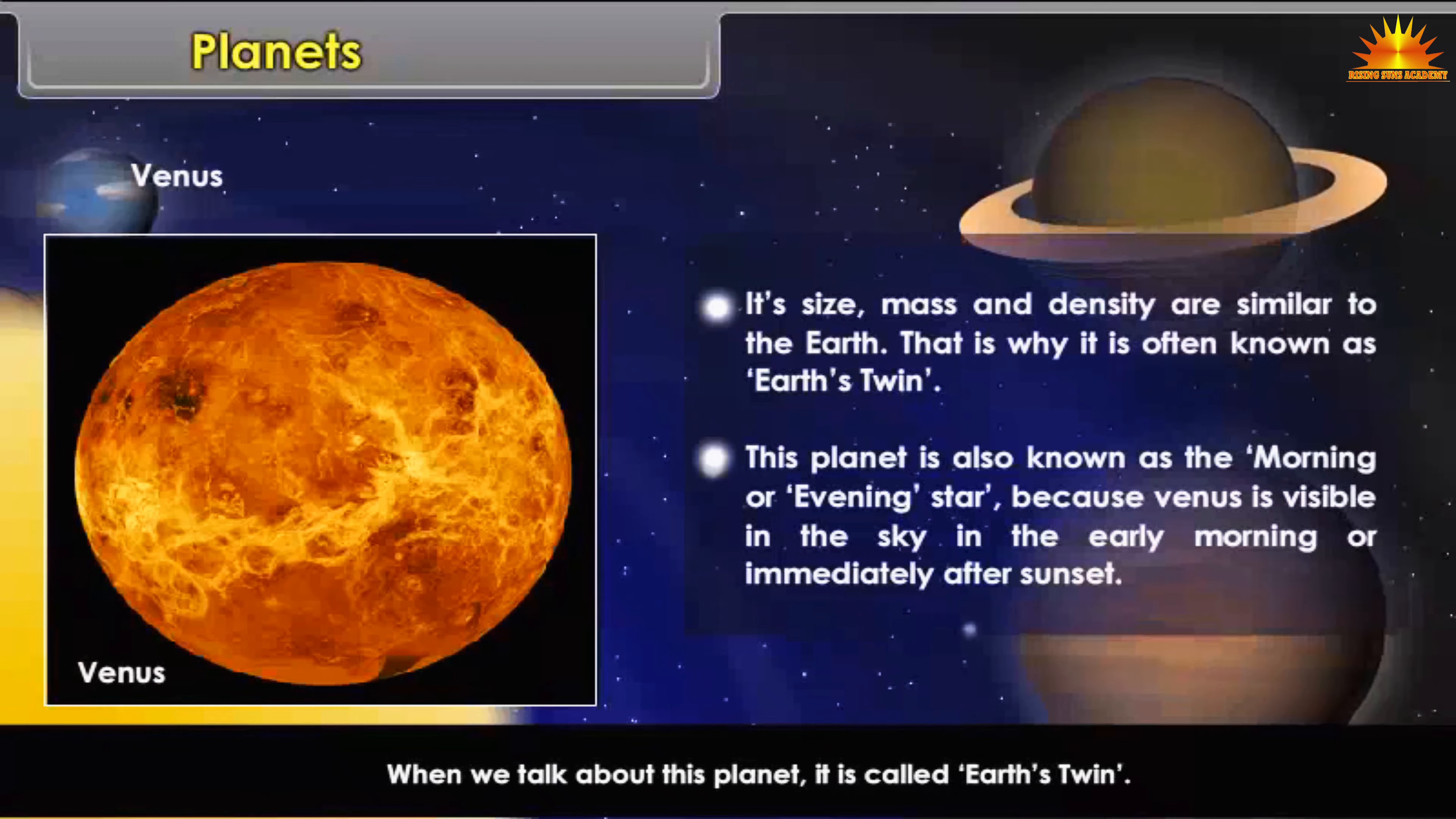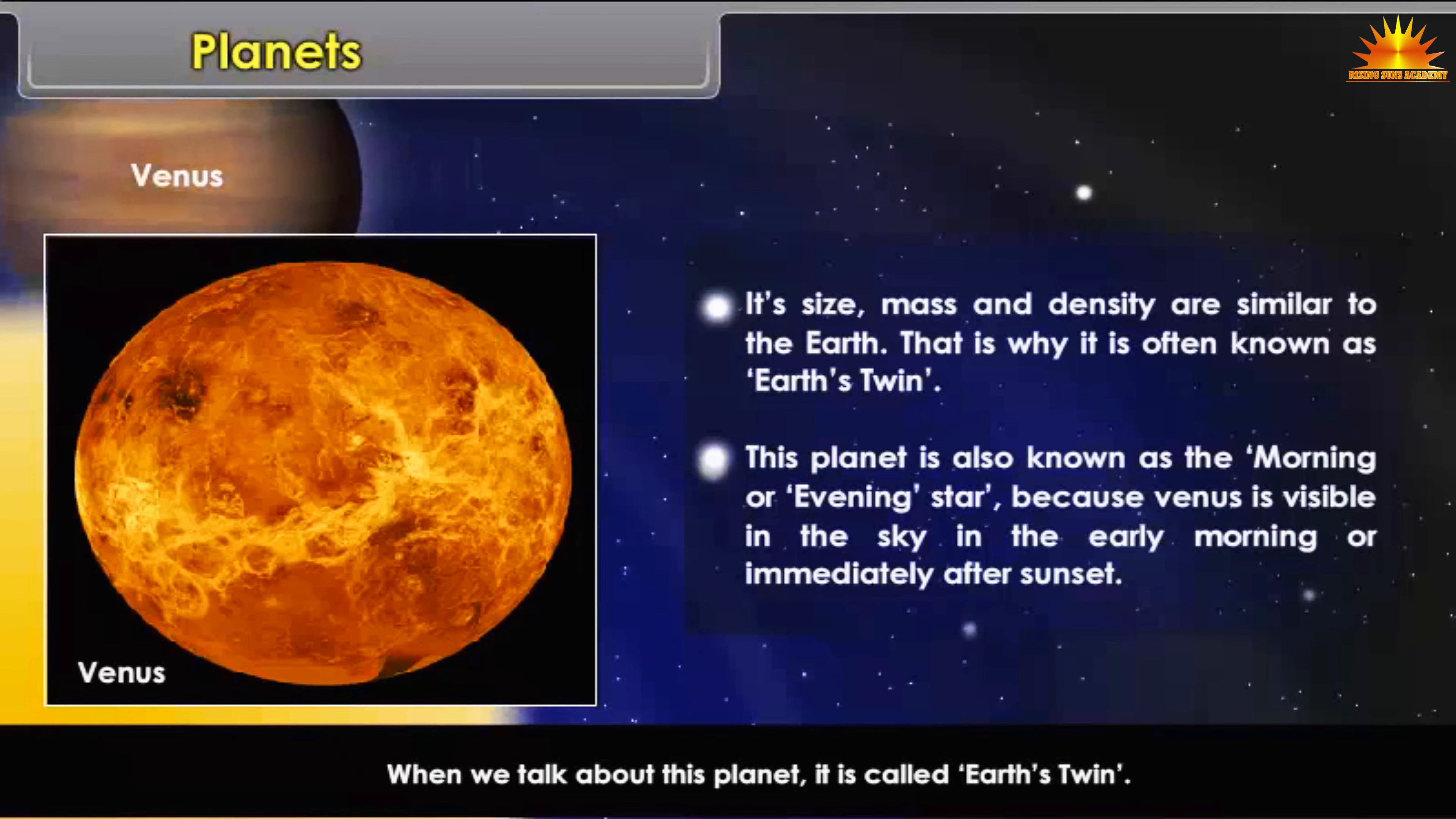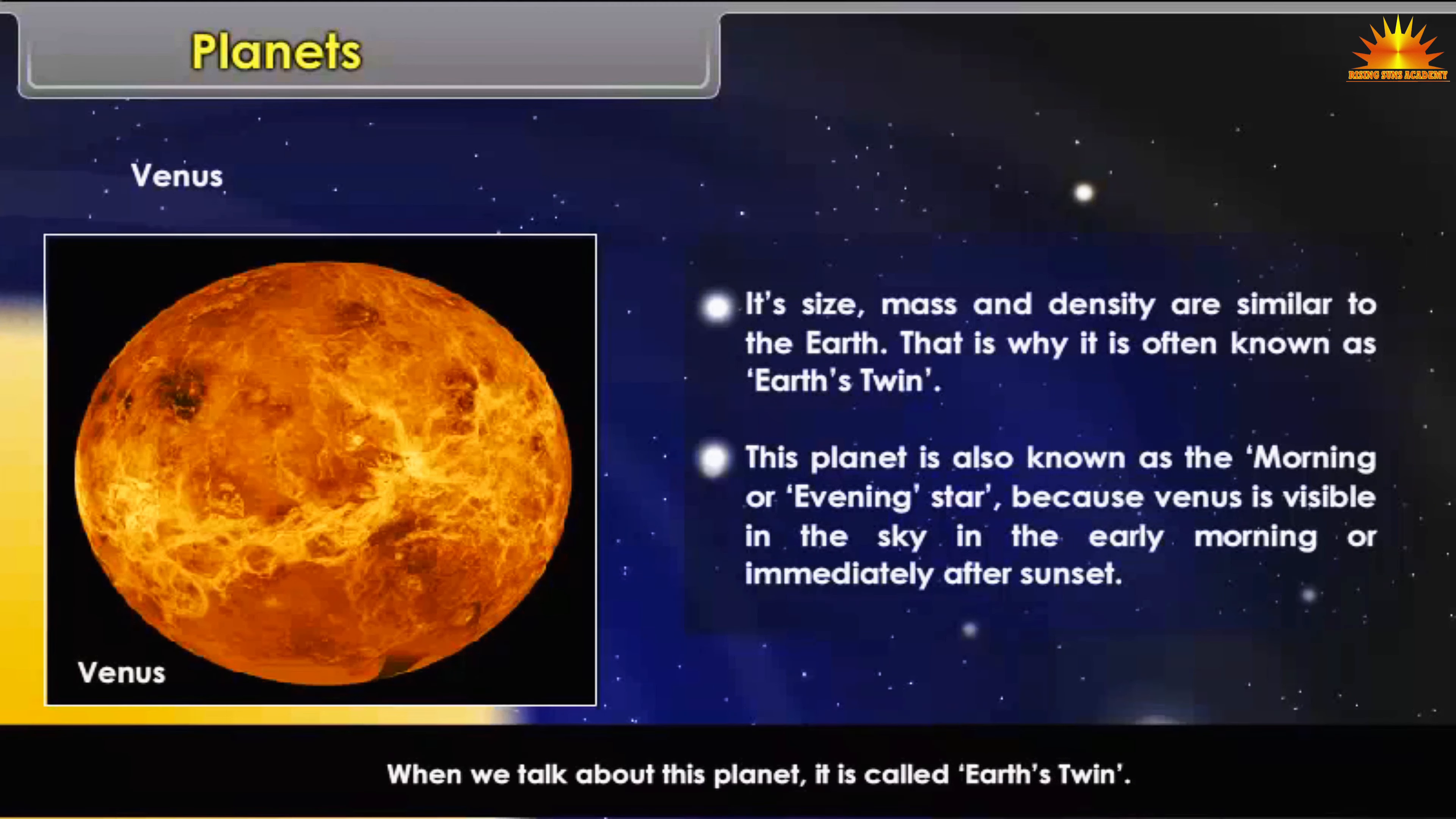This planet is also known as the morning or evening star because Venus is visible in the sky in the early morning or immediately after sunset.